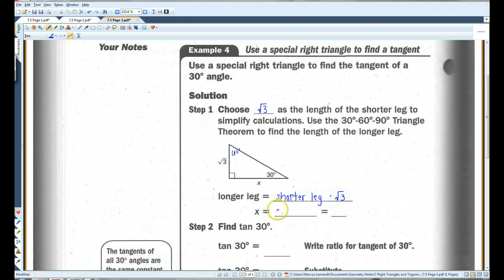The longer leg is a shorter leg times root 3. So, x is root 3 times root 3, which is 3. Okay. So, this is 3.